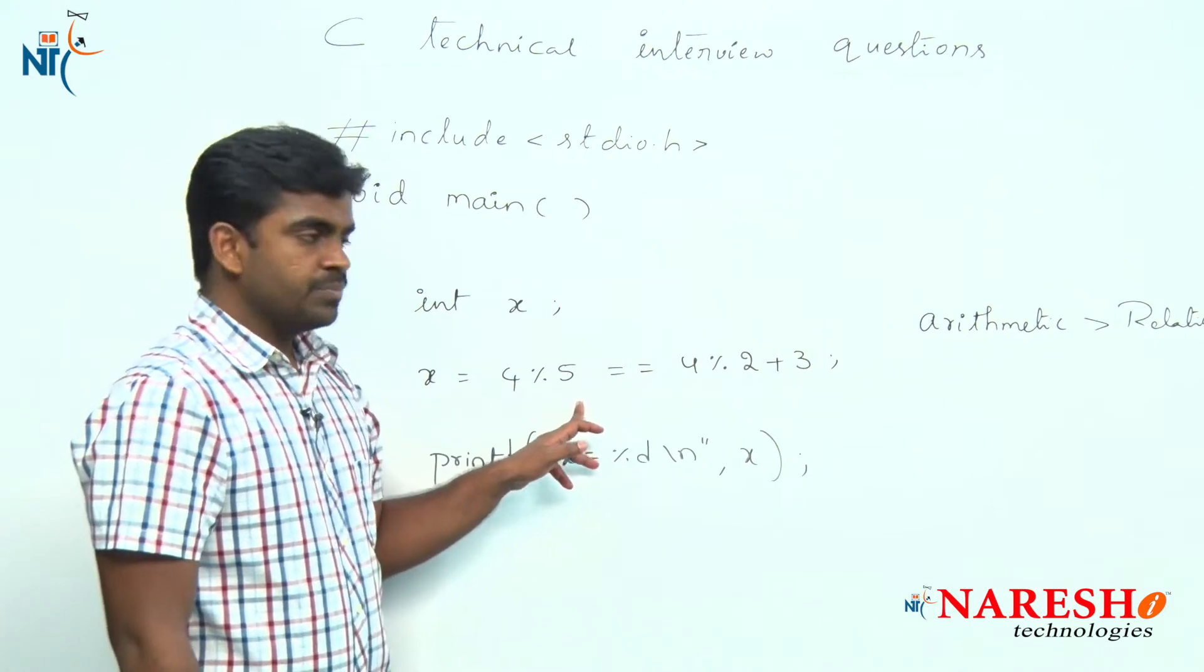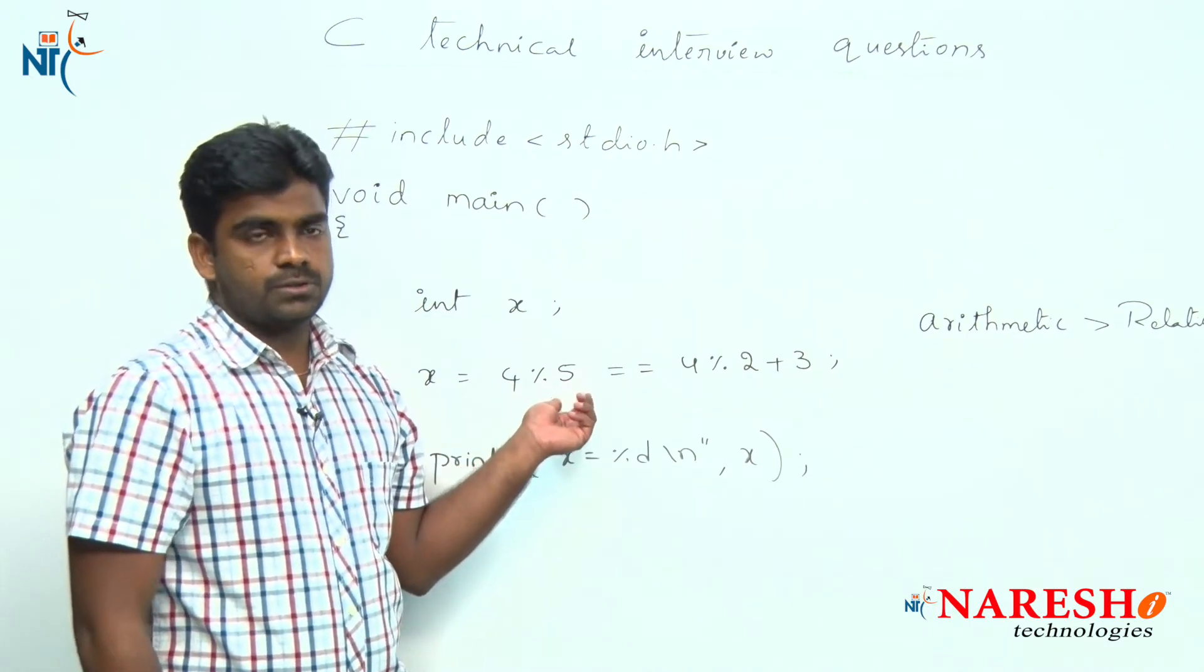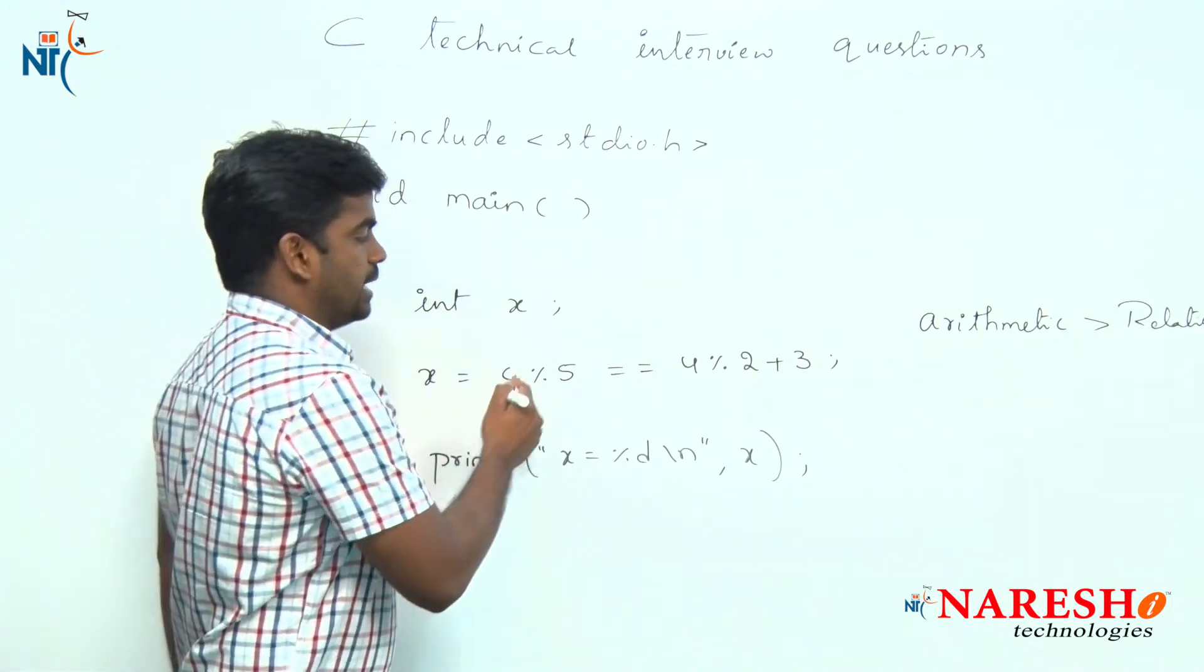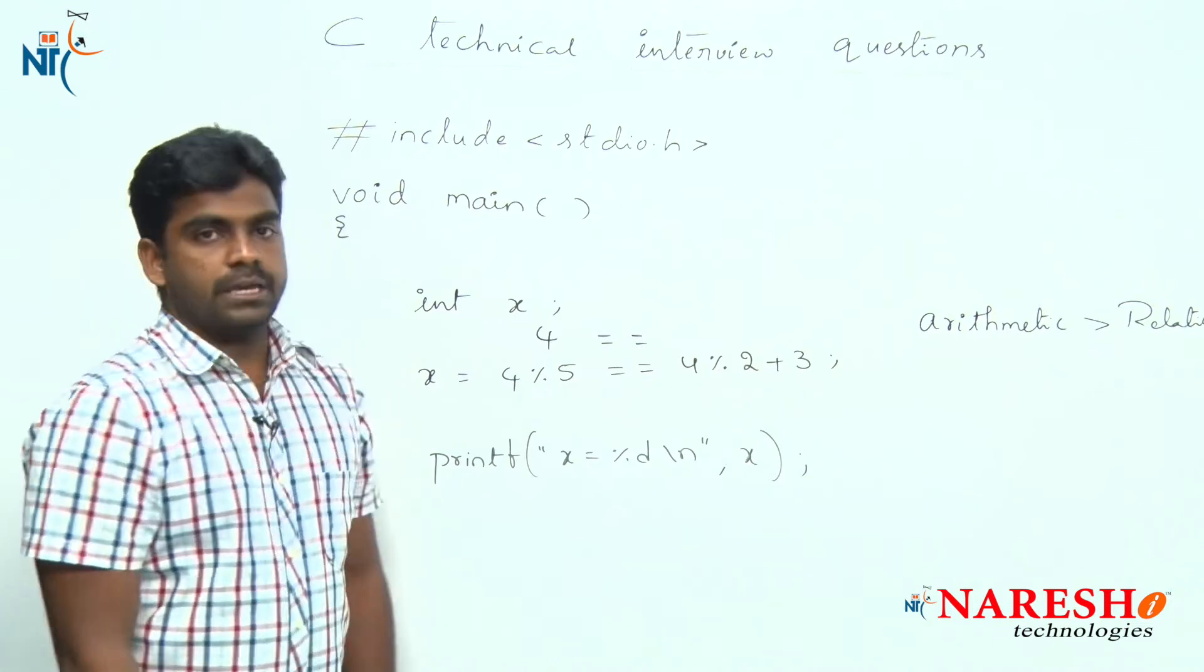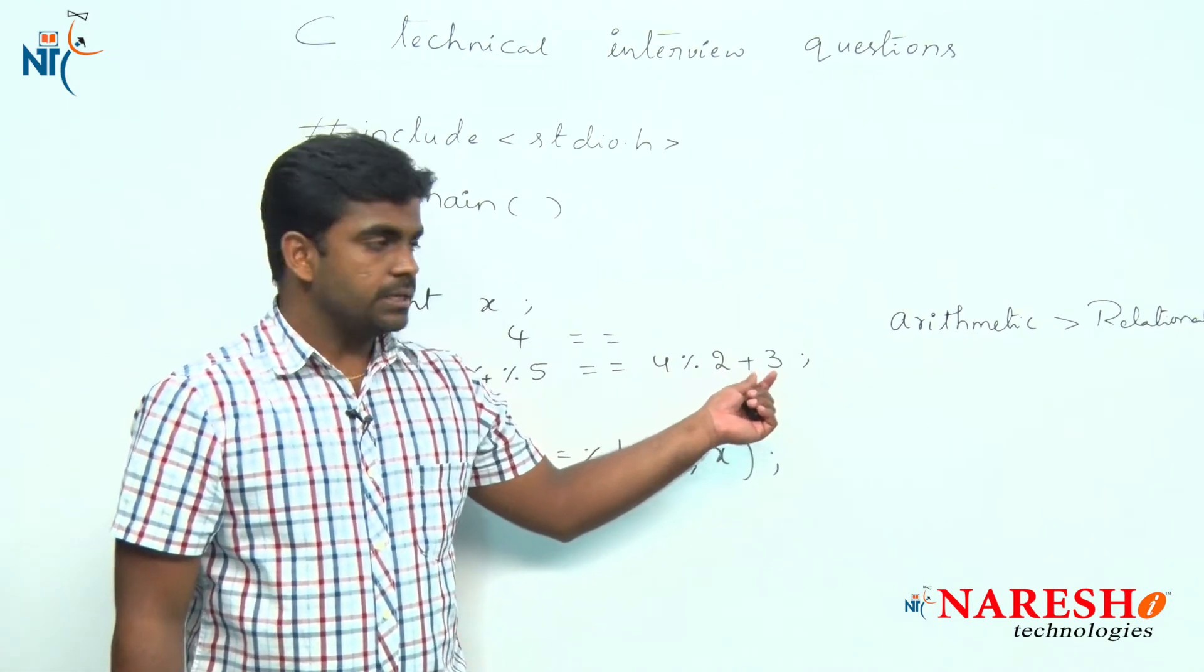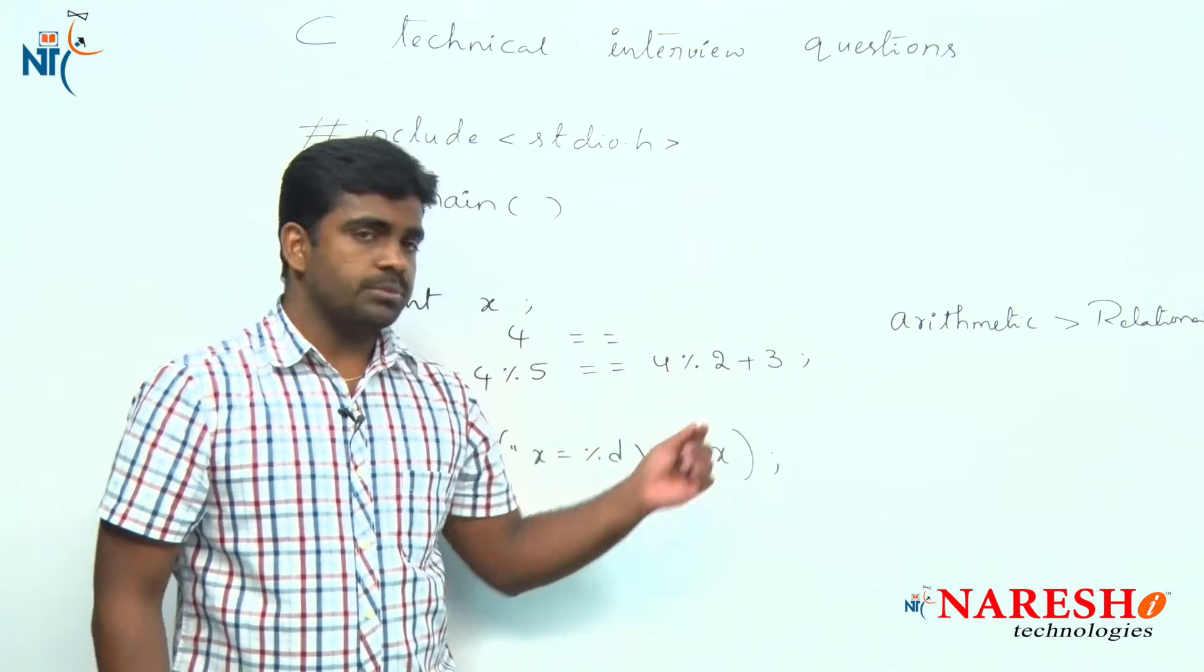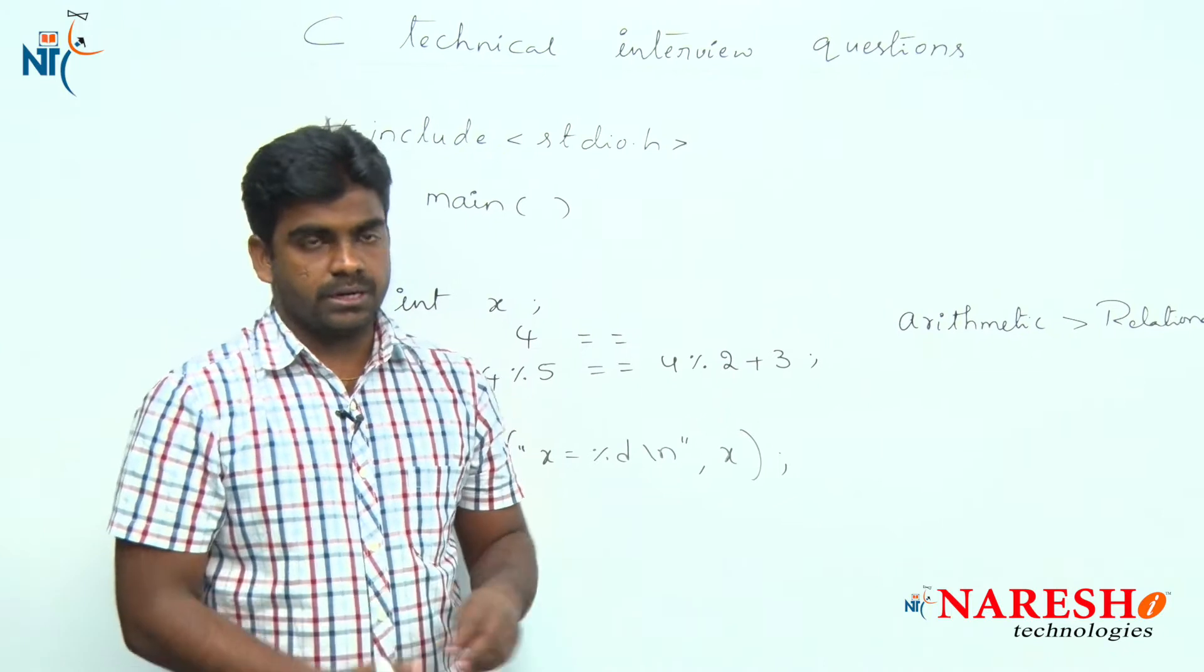4 mod 5 means 4 is not divisible by 5. It will give the remainder directly, 4 equals equals. And here is 4 mod 2 plus 3. Here are these two arithmetic operators, but which has highest priority among all the arithmetic operators? Mod has highest priority than plus.